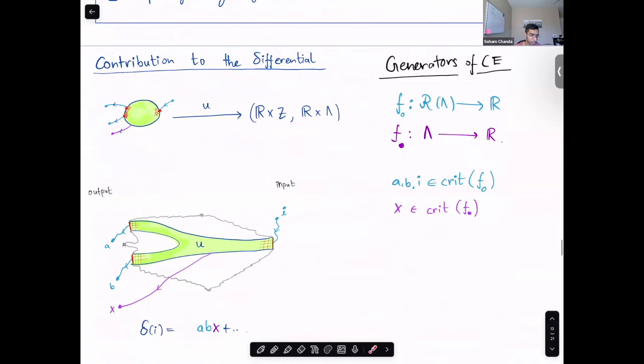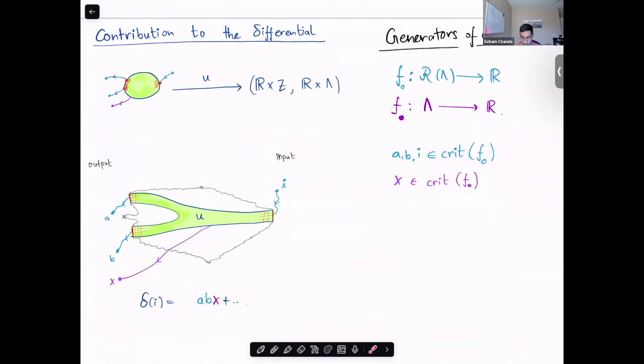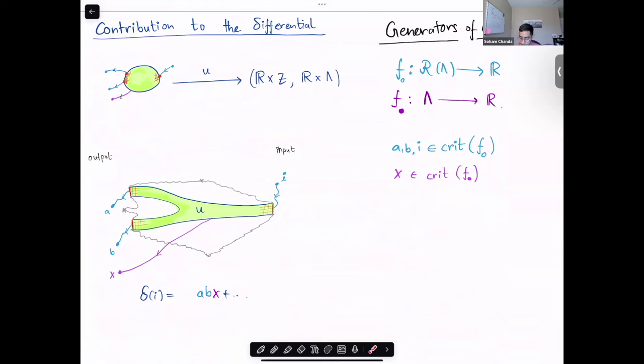Okay, now we'll go towards the construction of the Chekanovic-Eliashberg algebra. The generators come from critical points of two Morse functions. This is a Morse function on the space of Reeb chords. This is a Morse function on the Legendrian. We need this because we have Morse-Bott degeneracy for the space of Reeb chords, and we need this to allow for cobordisms which are non-exact. Let's say you are trying to compute the differential on an input i, where i is a critical point of the Reeb chord. So, i is actually a Reeb chord.